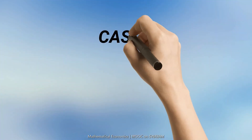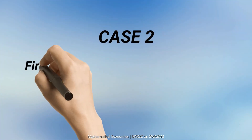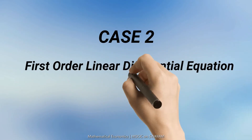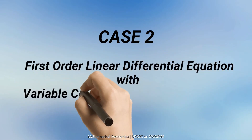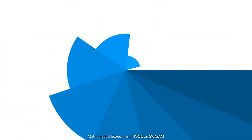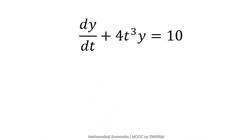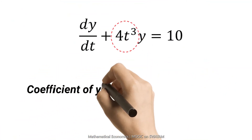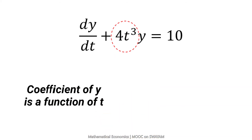The second case may be a first-order linear differential equation with variable coefficient and constant term. Observe this differential equation — the coefficient of y is a function of t and the right-hand side has a constant term. This is a first-order linear differential equation with variable coefficient and constant term.